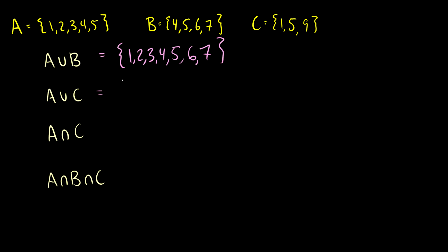What about A union C? Well, A has 1, 2, 3, 4, and 5, and C has 1, 5, and 9. We already have 1 and 5 written down, but we don't have 9, so we'll just put 9 in there.